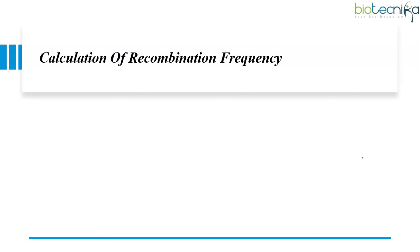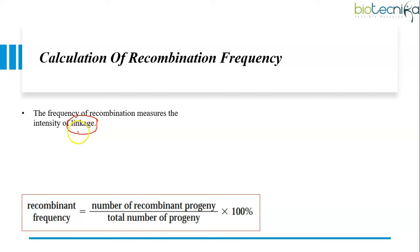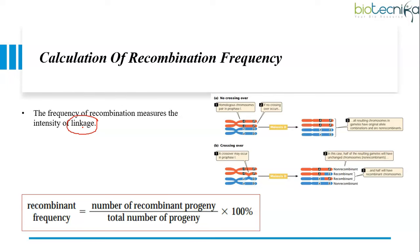Recombination frequency is calculated using the formula: number of recombinant progeny divided by total number of progeny, multiplied by 100. The frequency of recombination measures the intensity of linkage. More closely located genes on the same chromosome have less chance of undergoing crossing over — meaning more chance of being inherited together. For closely linked genes, crossing over does not take place in every meiosis, so when there is no crossing over, only non-recombinant gametes are produced.